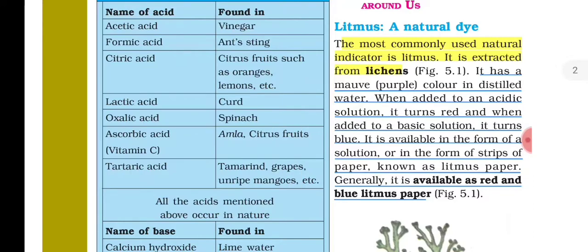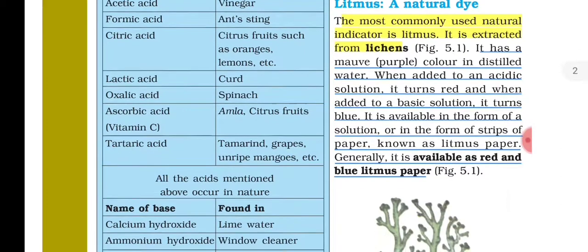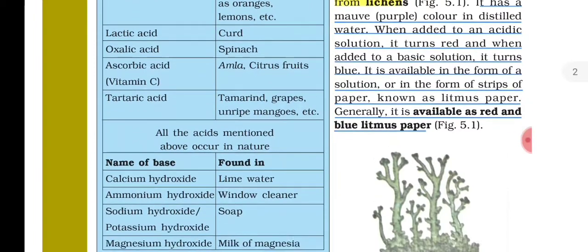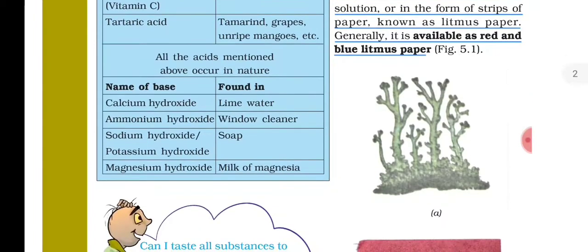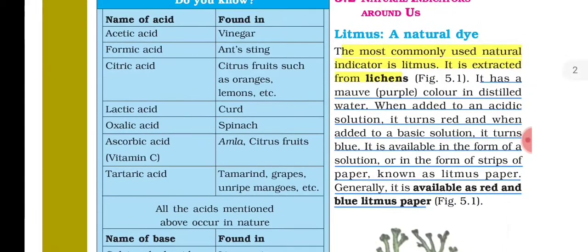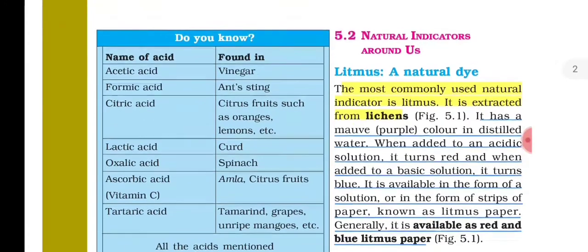Litmus is a natural indicator obtained from lichen plants. Red and blue litmus paper is shown in figure 5.1. This is how litmus works as a natural indicator.